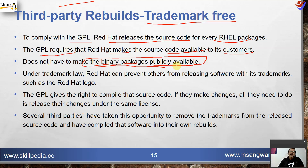Source code means programs written in C, C++, or whatever language is used to develop the software. Binary means the executable file — the language of zeros and ones understood by the processor. Microsoft does not release the source code; therefore you have to use Windows exactly as given, and you cannot have different brands of Windows. There is only one Windows, and that is Microsoft.